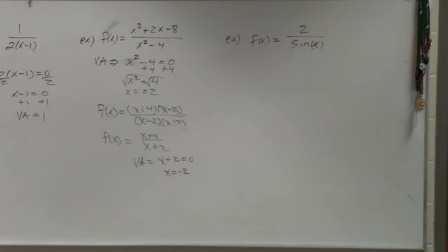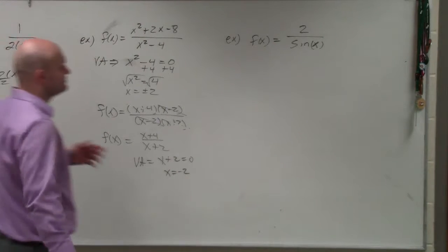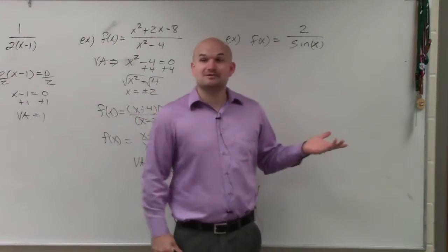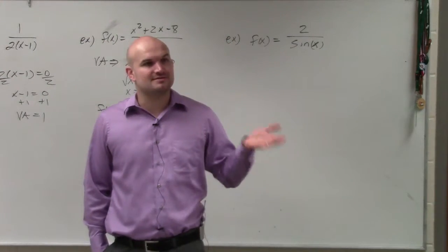So in trig, again, just think about vertical asymptotes. Vertical asymptotes are where the graph is not defined, right?